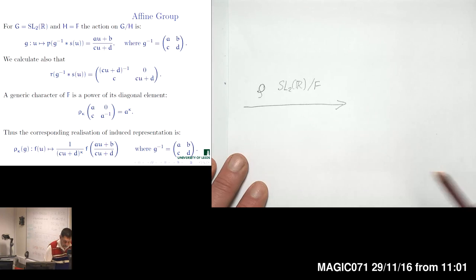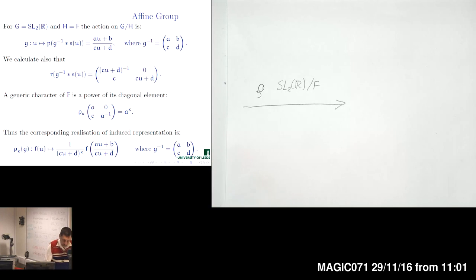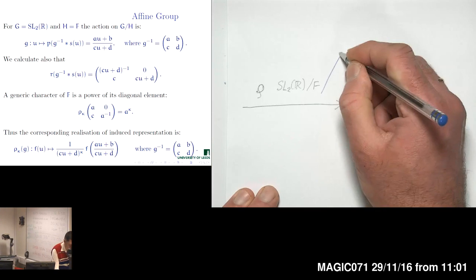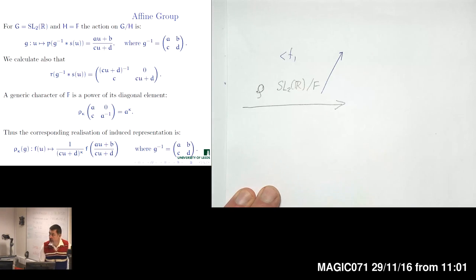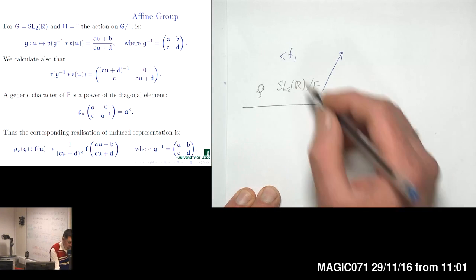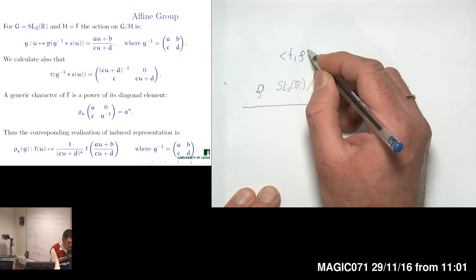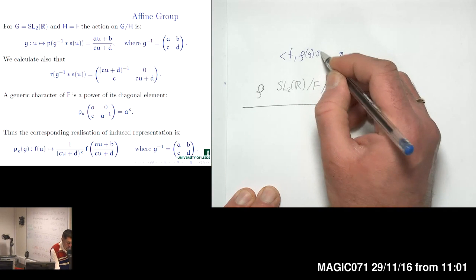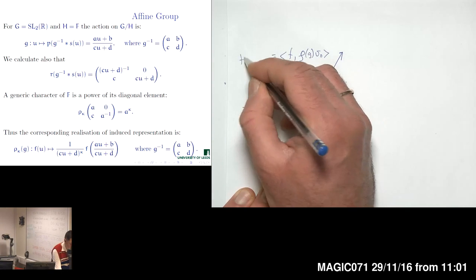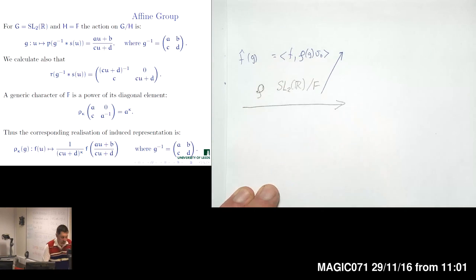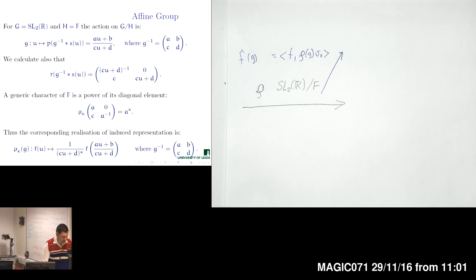The corresponding homogeneous space, as we investigated in the geometry part of the course, can be identified with the real line. For functions on the real line we can build a wavelet transform — the inner product of a function with the coherent states or wavelets obtained by action of representation on the mother wavelet v-naught — resulting in a product depending on an element of the group G.